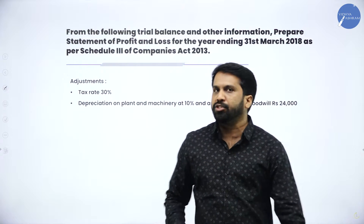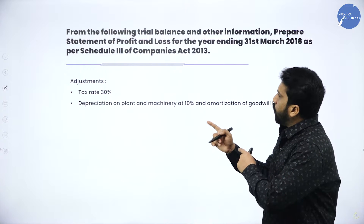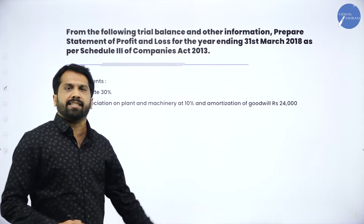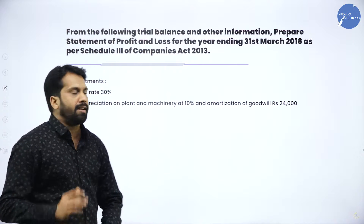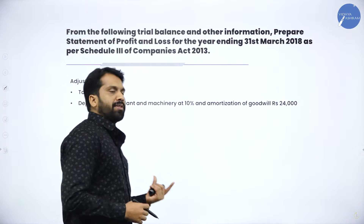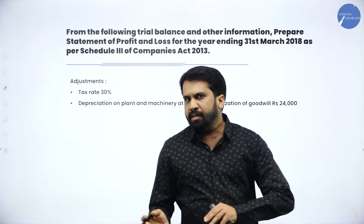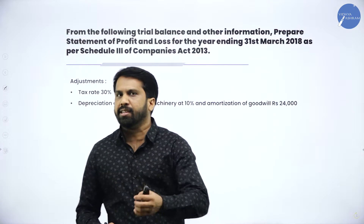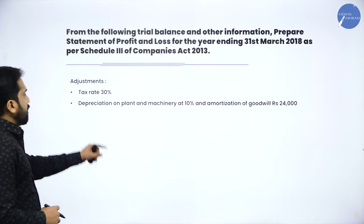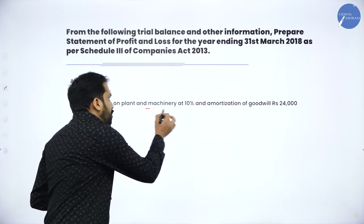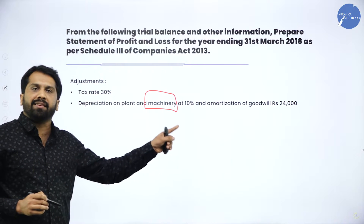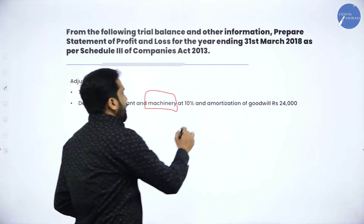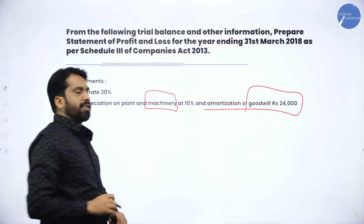They have given additional information: first, tax rate is 30 percent — as I told you, every problem you will get tax rate 30 percent. Now, depreciation on plant and machinery is 10 percent. In the previous problem depreciation was given directly, like 5,000 or 6,000; here they have given the value of machinery and you calculate 10 percent to get depreciation. Amortization of goodwill is 24,000.